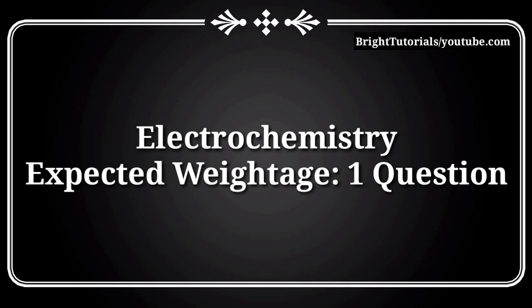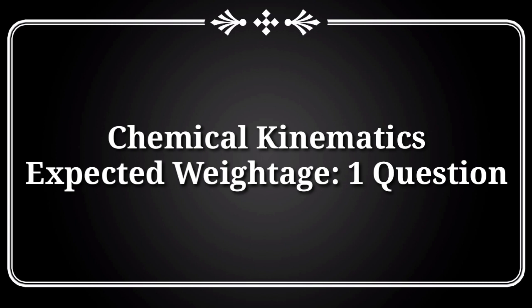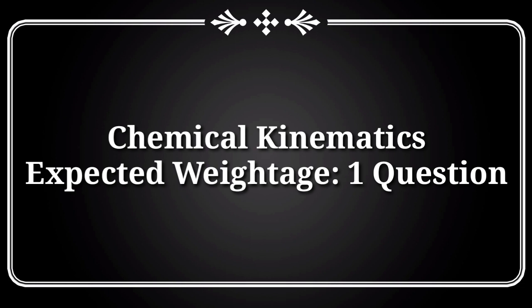After that, start with the chapter Electrochemistry, which contains one mark weightage in MSET. Important topics are Faraday's law, Nernst equation, and standard electrode potential. Then start with Chemical Kinetics, which also contains one mark weightage. Important topics are rate of reaction, rate equation, and related problems.